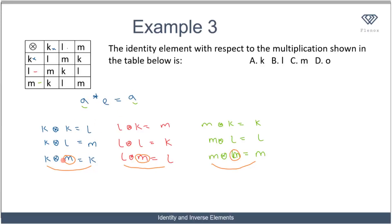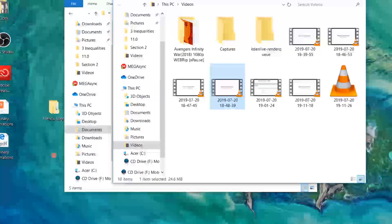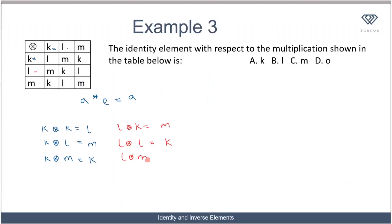Moving to the next row: l★k equals m, l★l equals k, and l★m equals l. Finally, in the last row: m★k equals k, m★l equals l, and m★m equals m.